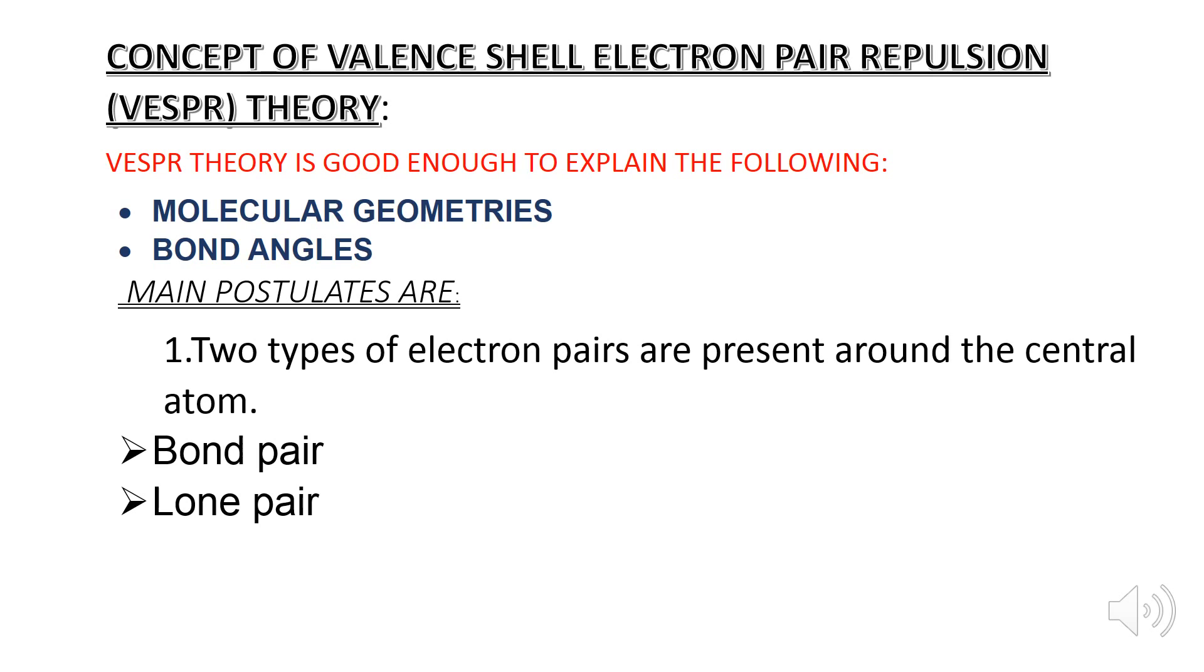Main postulates are: two types of electron pairs are present around the central atom, that are bond pair and lone pair.